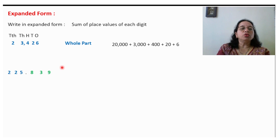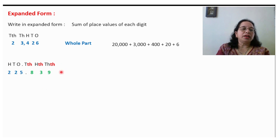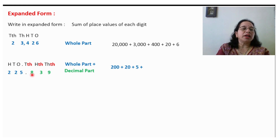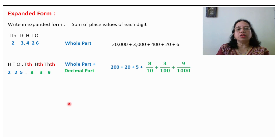The same concept we will use for decimals. Write down the places. For the whole part: 200 plus 20 plus 5. Now for the decimal part, we write plus 8 upon 10, plus 3 upon 100, plus 9 upon 1000.